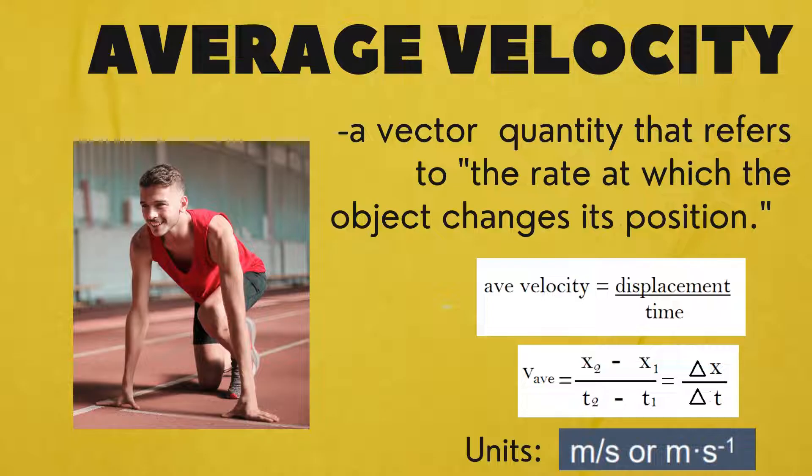Average velocity is a vector quantity that refers to the rate at which the object changes its position. To compute the value of the average velocity, we will use the formula displacement divided by time. Please take note that displacement is a vector quantity that is equal to x sub 2 minus x sub 1. The unit for the average velocity is equal to meter per second.